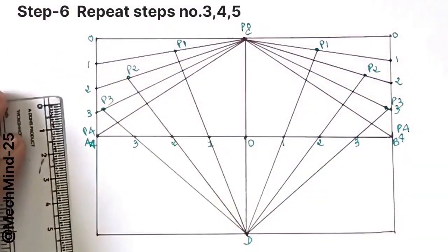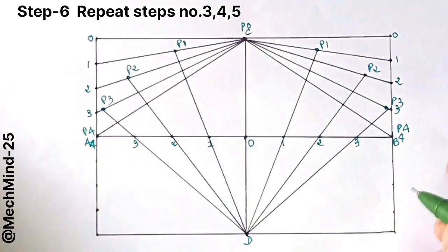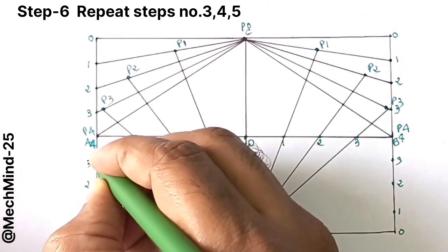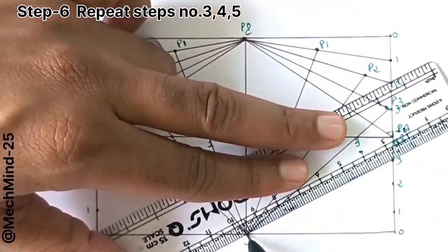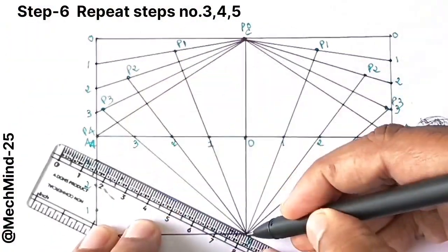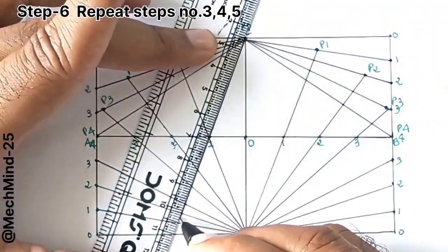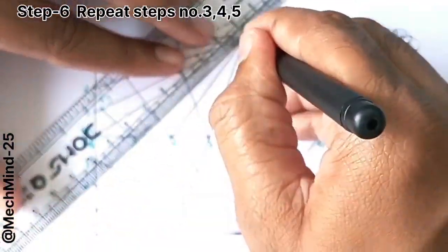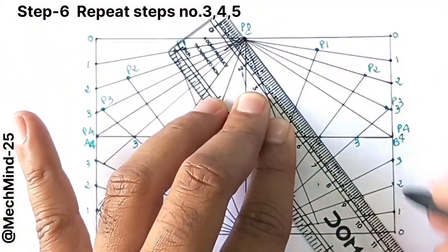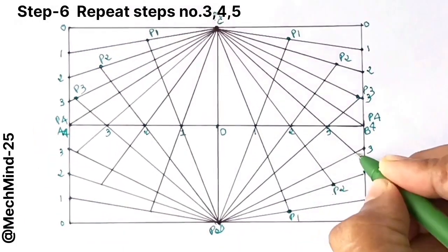Repeat the same process for the third and fourth sub rectangles on the opposite side. That means divide and draw the same types of lines to complete the full grid. By repeating steps 3, 4 and 5, find the intersection points. Mark all the intersection points carefully.